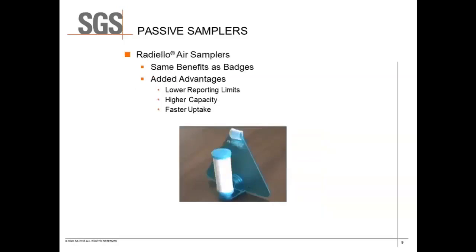A radialo sampler is very similar to a badge and has the same benefits, but with added advantages: lower reporting limits, higher capacity, and a faster uptake rate. These advantages are due to its three-dimensional cylindrical design, which allows for faster uptakes, lower reporting limits, and higher capacity due to increased surface area.